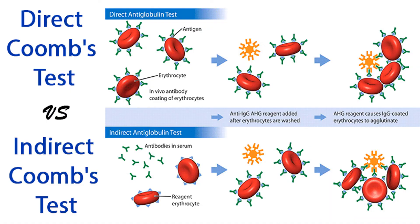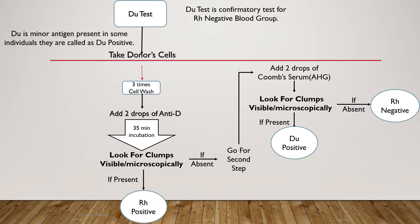This figure shows the principle of DCT and ICT. The DCT detects antibodies which are already present on the RBC surface, while the Indirect Coombs Test detects antibodies present in the serum by adding pooled O-cells.